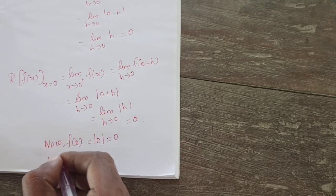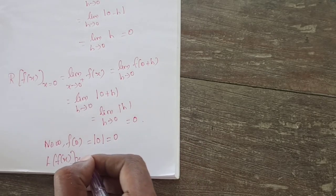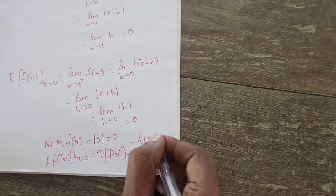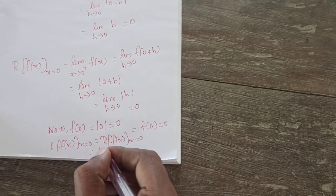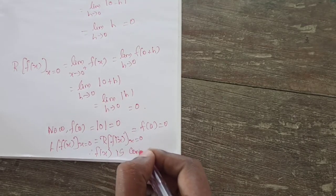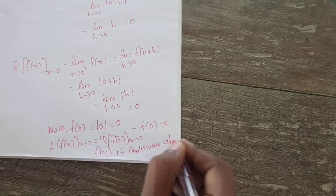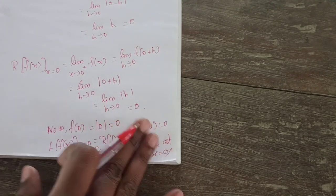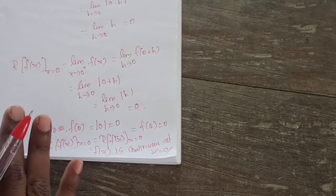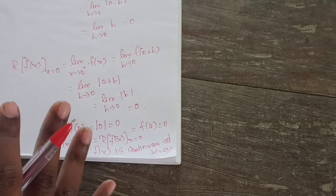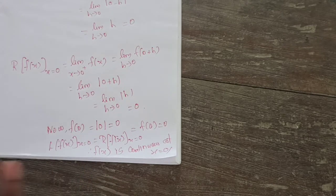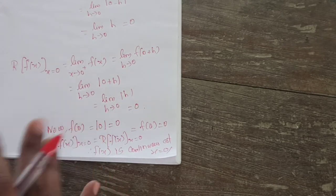Whether all are equal? Yes. So L of f of x at x equal to 0 equals R of f of x at x equal to 0 equals f of 0 — all values are 0. Therefore f of x is continuous at x equal to 0. So to prove continuity: if L of f of x equals R of f of x equals f of a — whatever point they ask — all values must be equal. If equal, say it is continuous; if not equal, say it is not continuous.